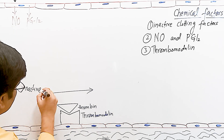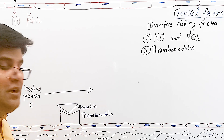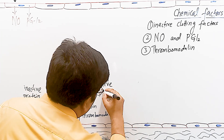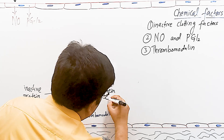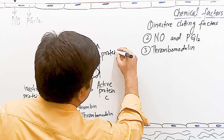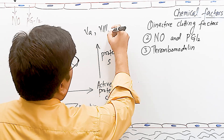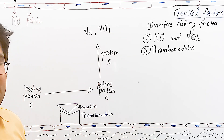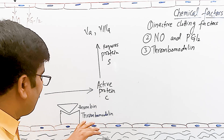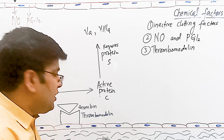The thrombin-thrombomodulin complex not only removes thrombin (activated factor number 2) from blood and prevents clotting, it also activates an anticoagulant called protein C. Normally protein C in our blood is inactive. This protein C is activated by the thrombin-thrombomodulin complex to form active protein C.